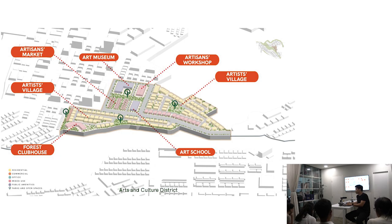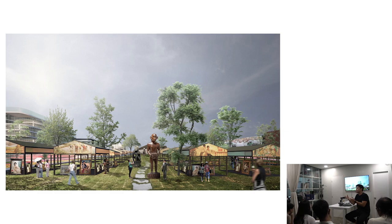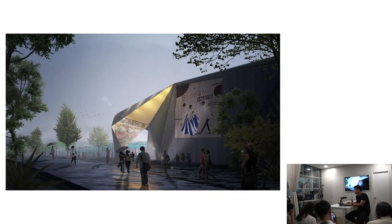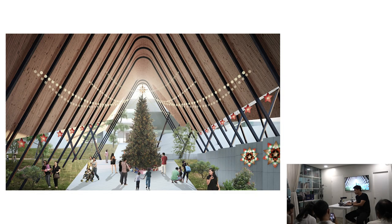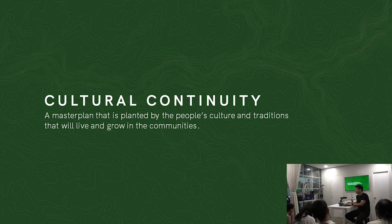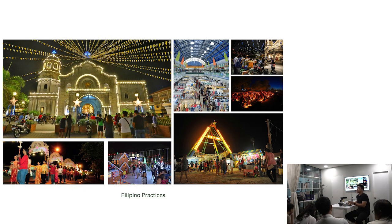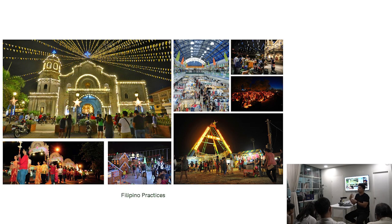The arts and culture district serves as a portal to the forest city — featuring a graffiti wall, open amphitheater, or park. The people center is the city hall. Cultural continuity is key: a master plan planted by the people's culture and traditions that will live and grow with the community. When designing a master plan you don't start from scratch — you start with the existing culture of the people. You become the enabler that heightens what they already have, continuing Filipino culture and local practices like Simbang Gabi, life on the streets, seryoso, peria, and local fluvial processions.